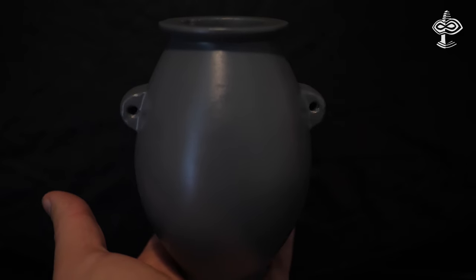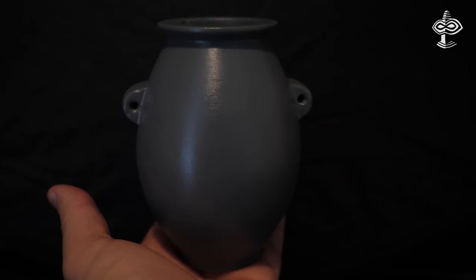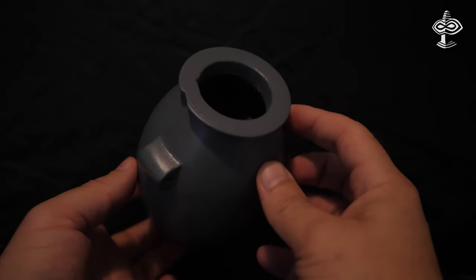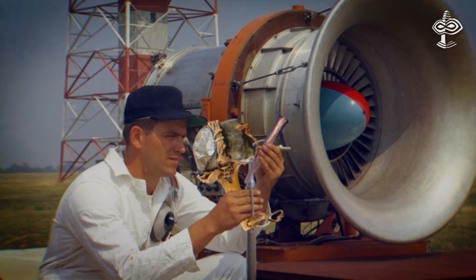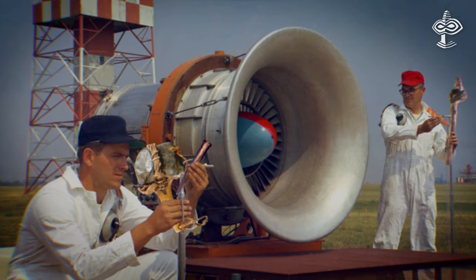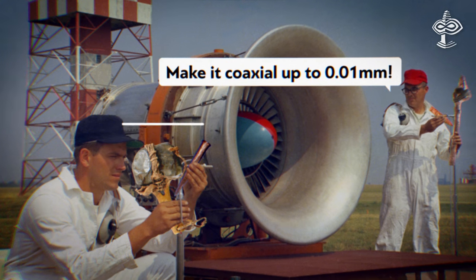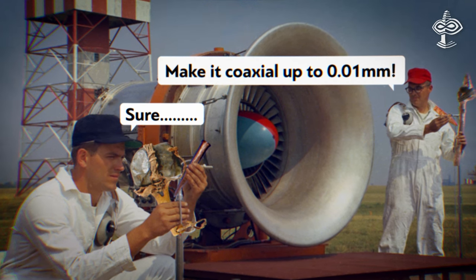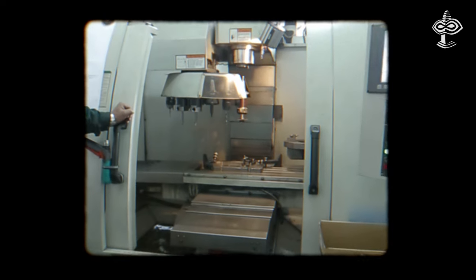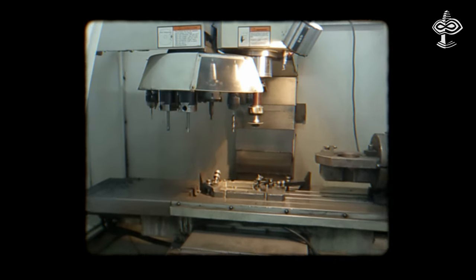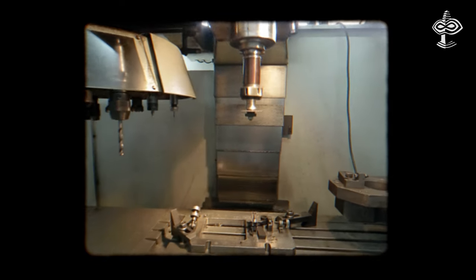The object's remarkable accuracy also refutes the notion that high-precision is achievable with unlimited production time. This is a clear misconception. To illustrate, giving modern mechanical engineers stone hammers and copper chisels and expecting precision akin to the artifact is absurd. This highlights that machines don't just expedite manufacturing; they achieve results unattainable by hand.